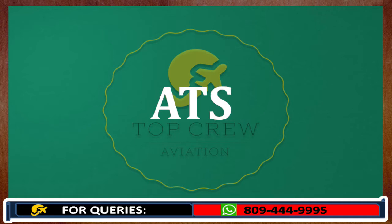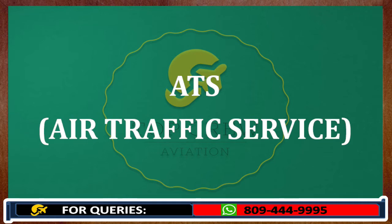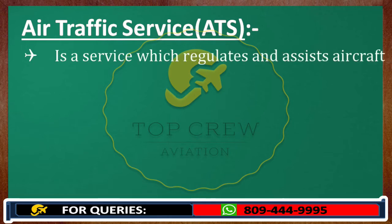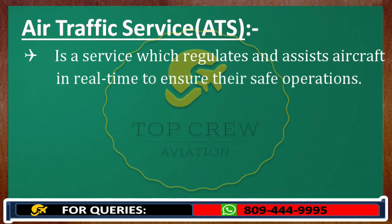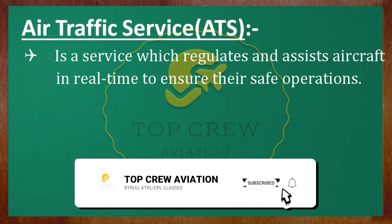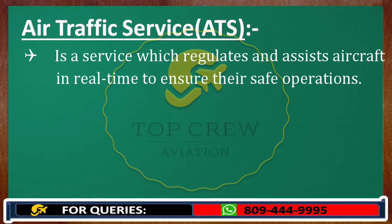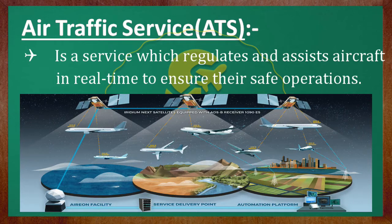The full form of ATS is Air Traffic Service. Air traffic service is a service which regulates and assists aircraft in real time to ensure their safe operations. Just as traffic police manage traffic in local areas, there is a management system handling all traffic-related activities across cities. In a similar fashion, services related to air traffic are known as air traffic service.